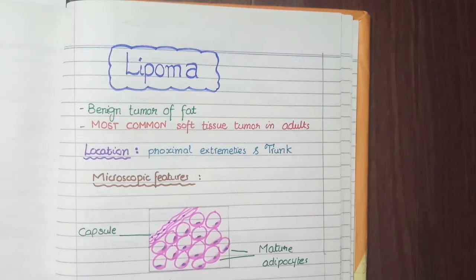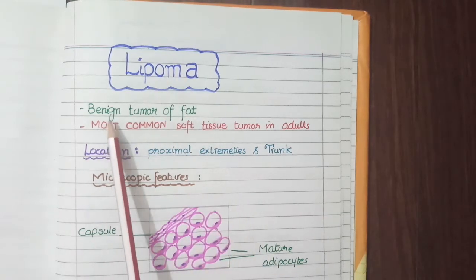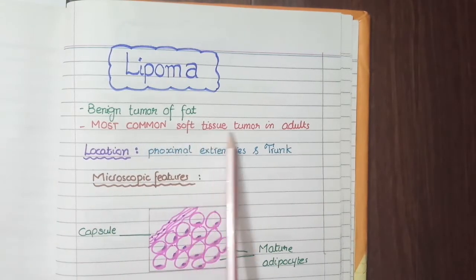Let's start with lipoma. Lipoma is a benign tumor of fat and it is the most common soft tissue tumor that occurs in adults.